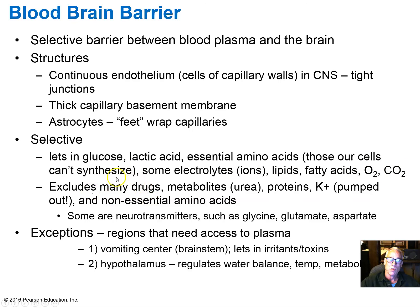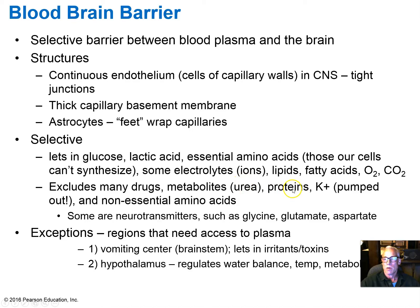The blood-brain barrier excludes many drugs. If there's a need for a drug to work in the central nervous system, extra research is needed to find a drug that not only provides the desired treatment but can also cross the blood-brain barrier. Metabolites and waste products of cellular metabolism may not cross. Proteins from the plasma and potassium ions are also excluded — potassium ions are actively pumped out of the cerebrospinal fluid by ATP, because it's very important not to let potassium build up, or cells won't be able to repolarize after an action potential.